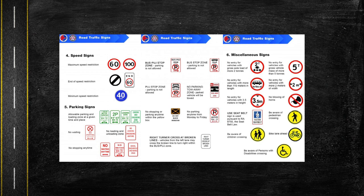There are also speed signs, which show maximum speed restriction, end of the speed restriction, and minimum speed restriction. The fifth type would be parking signs. When we see the color green, it means parking and loading zone are allowed at a given time and place. There are also no waiting, no loading and unloading zone, and no stopping anytime signs.